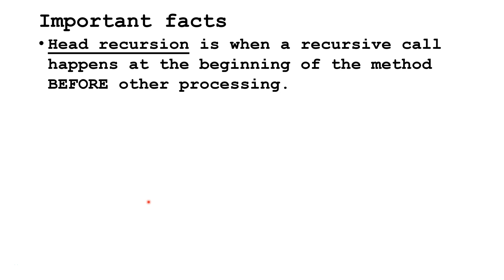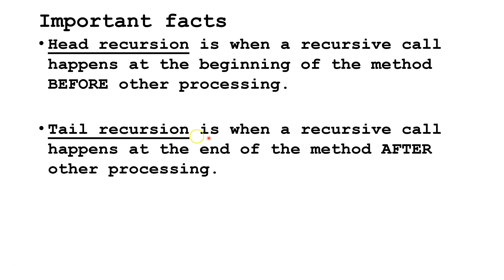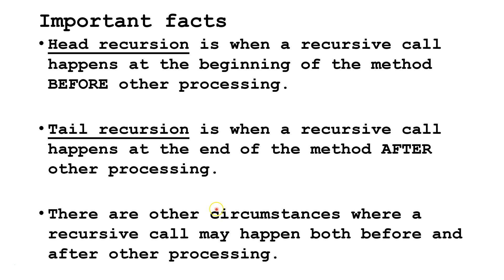Some important facts to know. Head recursion is when a recursive call happens at the beginning of the method before other processing. Tail recursion is when a recursive call happens at the end of the method after other processing. There are other circumstances where a recursive call may happen both before and after other processing.